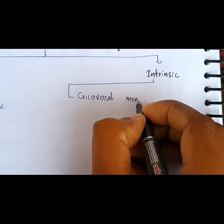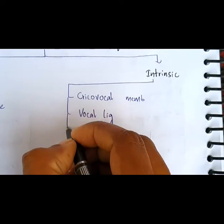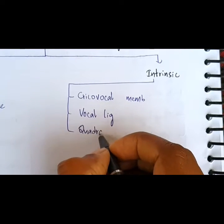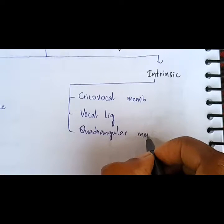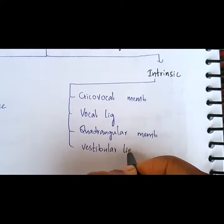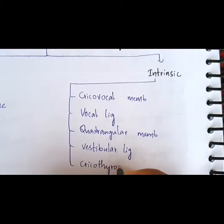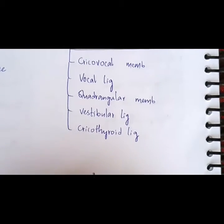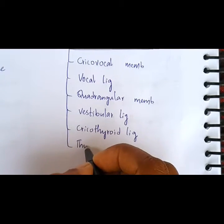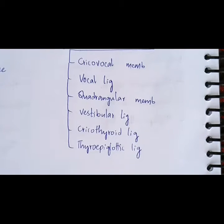The six intrinsic ligaments and membranes are: the cricovocal membrane, which gives rise to the vocal ligament; the quadrangular membrane, which is thickened to form the vestibular ligament; the cricothyroid ligament; and the thyroepiglottic ligament. As you can see, all these ligaments and membranes connect the structures within the larynx — these are intrinsic ligaments and membranes of the larynx.